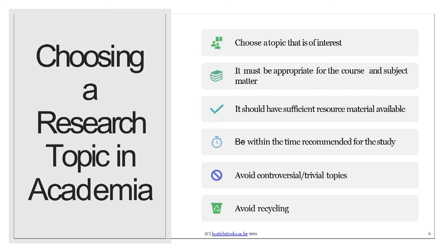Secondly, it is always important to choose a research title that is in your area of study. For students doing a master's in the School of Business specializing in banking and finance, human resource, supplies and procurement, or project management, there is no point in choosing a topic in human resource if you are doing strategic management. The alignment of your area of specialization should always inform your research title — your research title must align to the course, program, and subject matter you are studying.